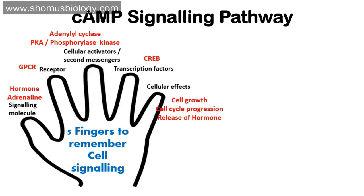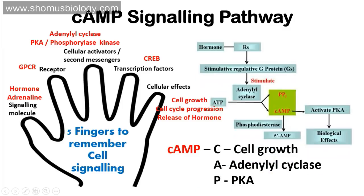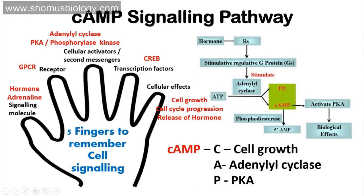If you know these five parameters, you know the cyclic AMP signaling pathway. The easy way to remember the sequence is: adrenaline binds to the GPCR, the GPCR activates adenylyl cyclase, adenylyl cyclase converts ATP into cyclic AMP, cyclic AMP activates PKA, PKA activates phosphorylase kinase, those kinases activate CREB, CREB enters the nucleus and drives transcription of target genes for the biological effects. You don't need to mug up the sequence — just look at the five finger concept picture.